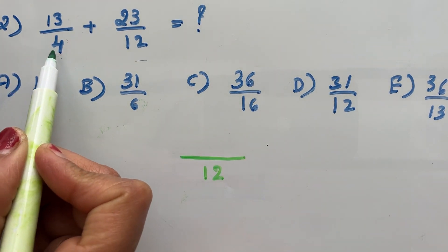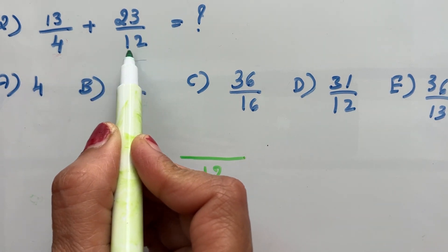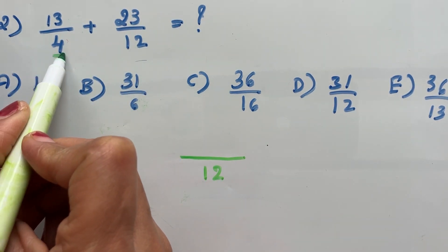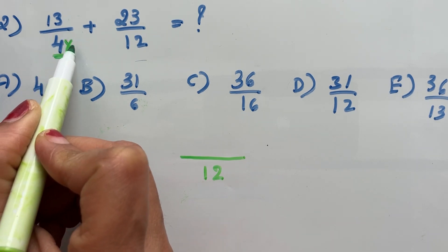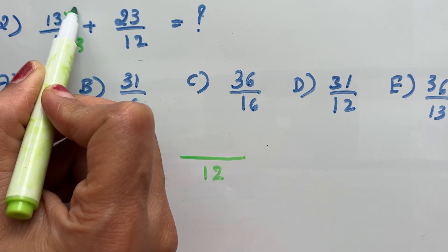Now you need to make this denominator 12. This one has 12 already, but you need to make this denominator 12. To make this 12, you multiply by 3 because 4 times 3 is 12. Multiply both sides by 3.